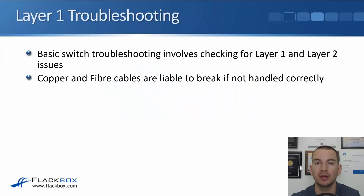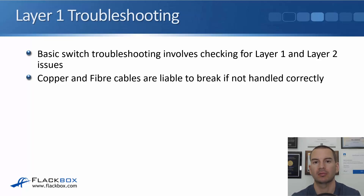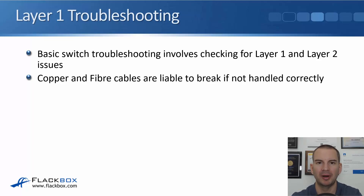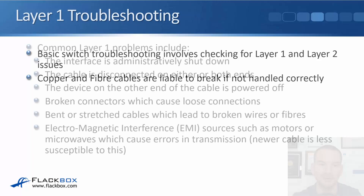This is going to cover troubleshooting at layer 1 and layer 2 of the OSI stack. Our copper and fiber cables are liable to break if not handled correctly. Please treat cables correctly — don't bundle them up and wrap them together because you're liable to break them if you do that. You'll see it happening quite a lot in the real world.